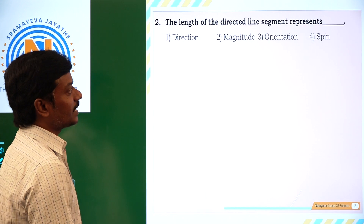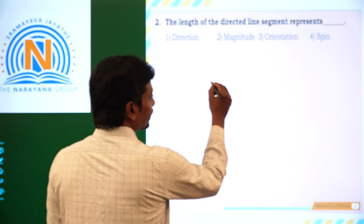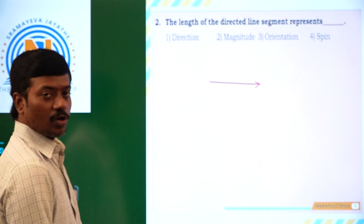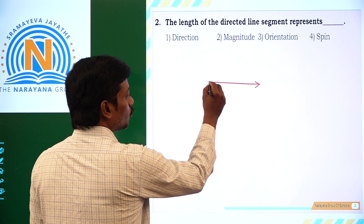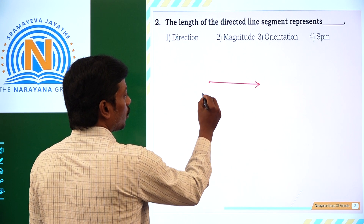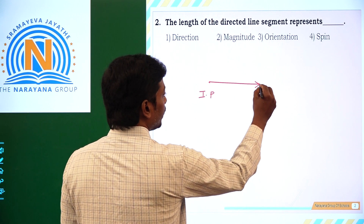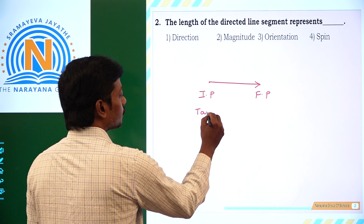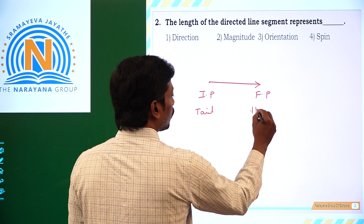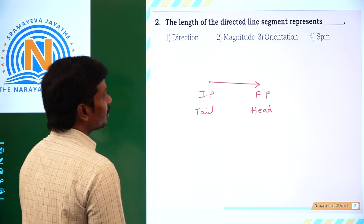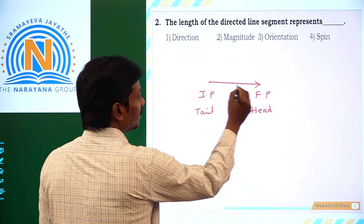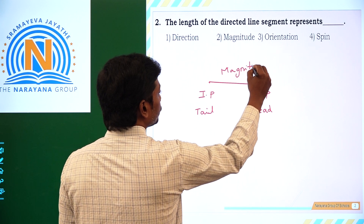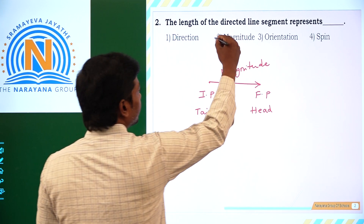The length of the directed line segment represents. For example, if this is the length of the directed line segment of a vector, it has two points — this is called the initial point and this is the final point. The initial point is also called the tail, and the final point is also called the head. So the length of the directed line segment between the initial point and the final point is called its magnitude. That's why the second option is correct.